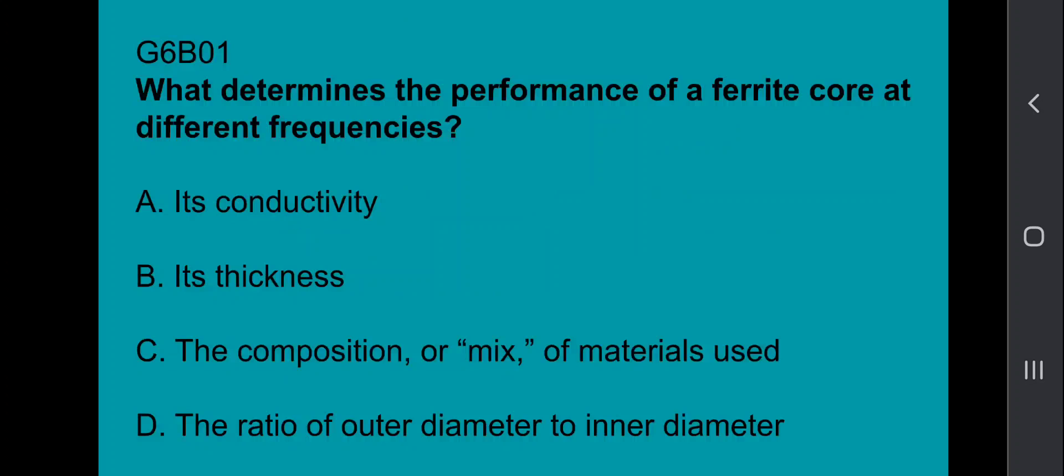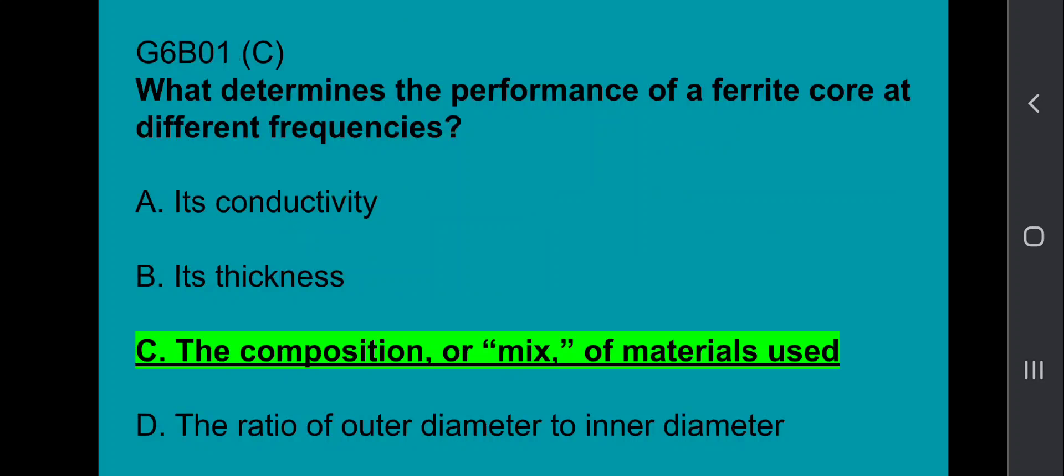G6B01: What determines the performance of a ferrite core at different frequencies? The composition or mix of materials used.